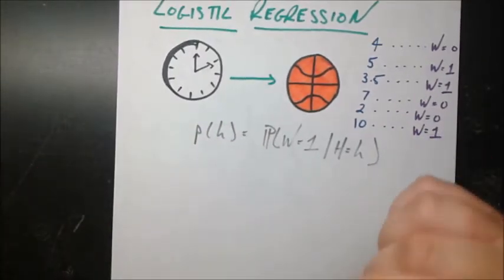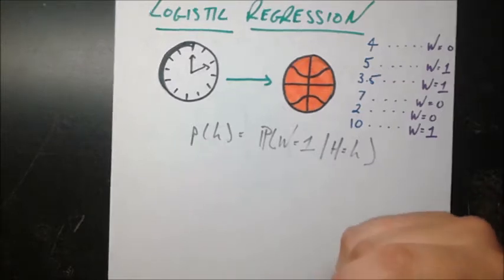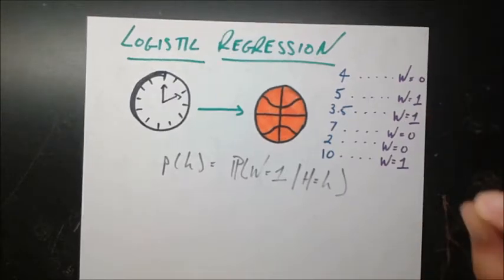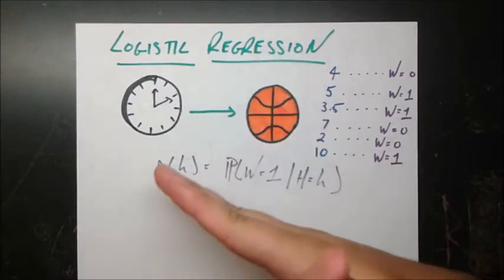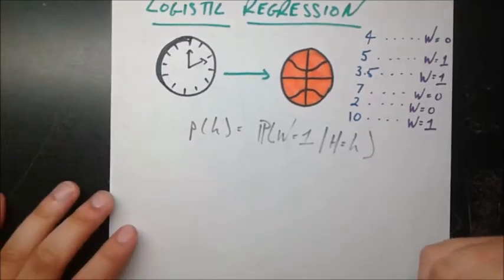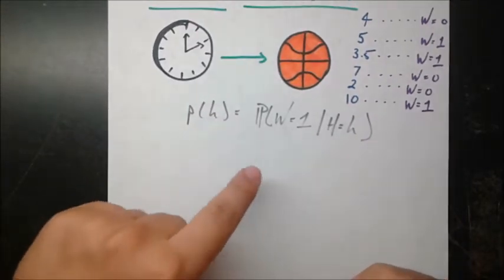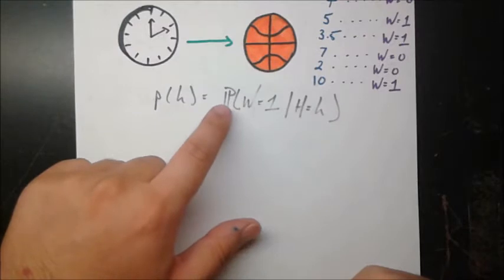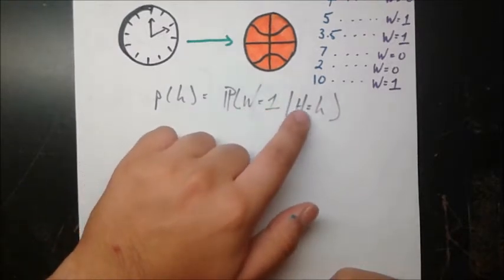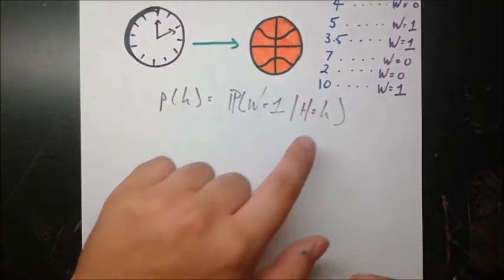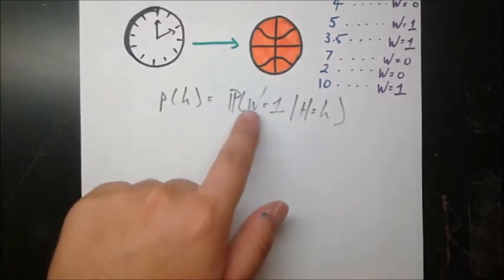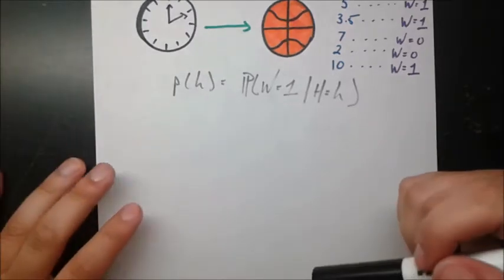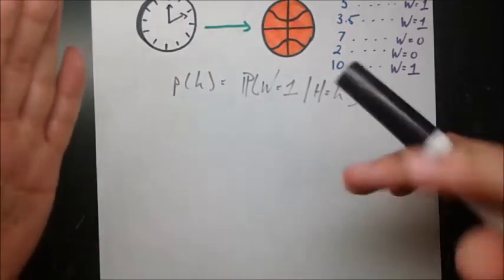So how are we going to do this? We still need to have some kind of continuous thing that we're predicting, but that continuous thing can no longer be whether you win or lose, because that's either 0 or 1. What is continuous is the probability of winning, because probabilities take a range between 0 and 1 and can be any continuous value in between. So P of H represents the probability of winning — that is, W equals 1 — given the number of hours a team practices is little h. This is now continuous, so we can use some kind of linear prediction model on this, and we'll see how we can use these probabilities to make a decision about whether we think the team will win or lose.